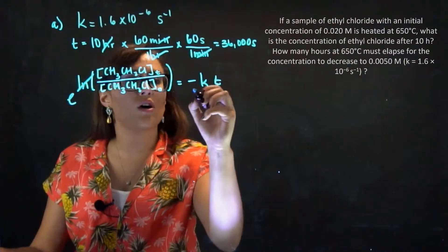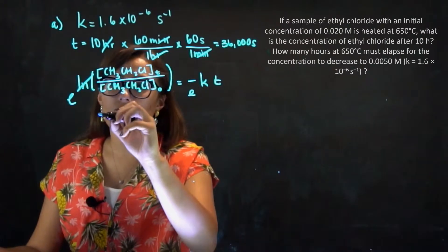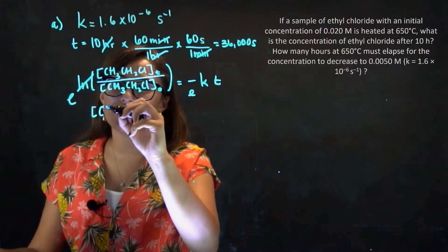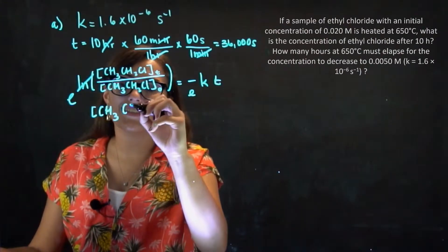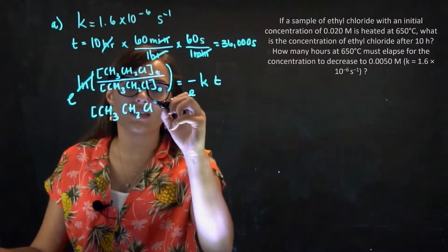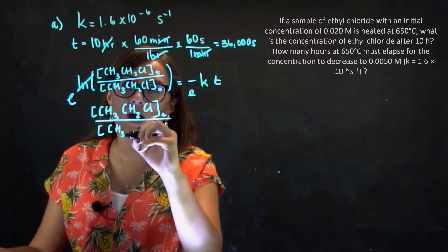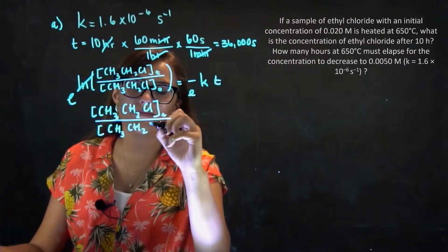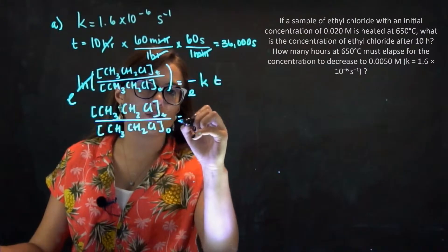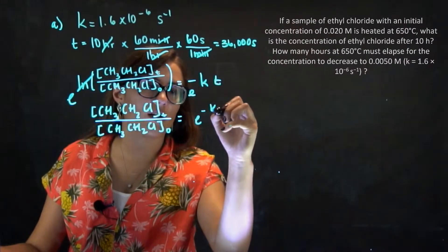Which is equal to the minus of the k times time. Yet again, in order to get rid of the natural log, we do E, and so this simplifies down to CH3, CH2, CL at some time over the initial concentration of our ethyl chloride, which is equal to E to the negative of kT.